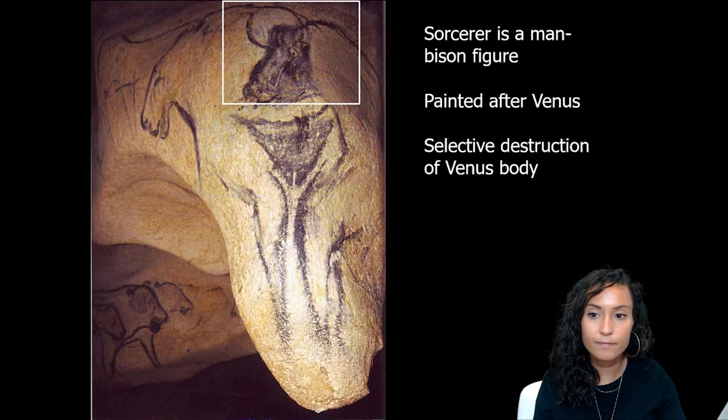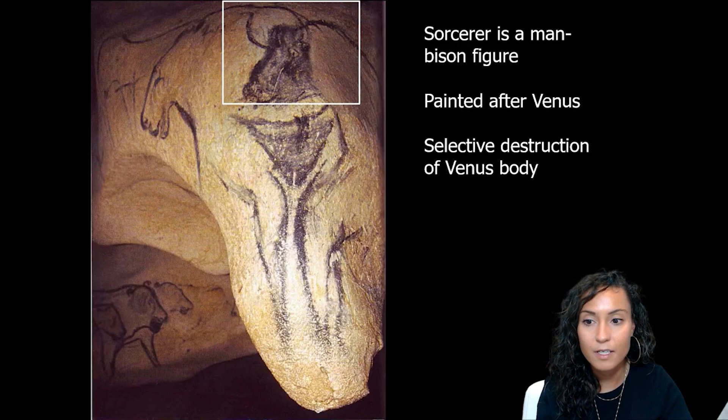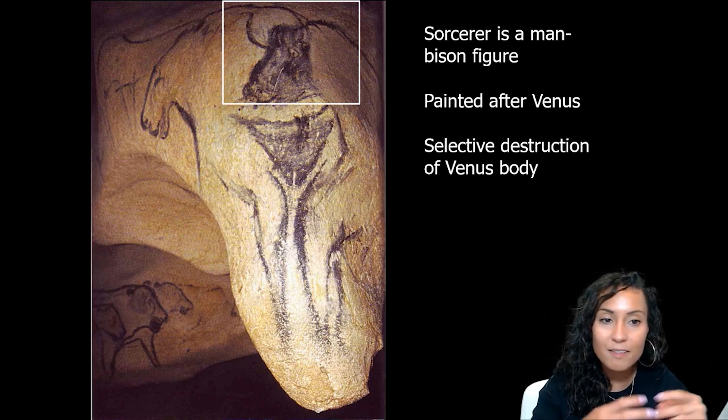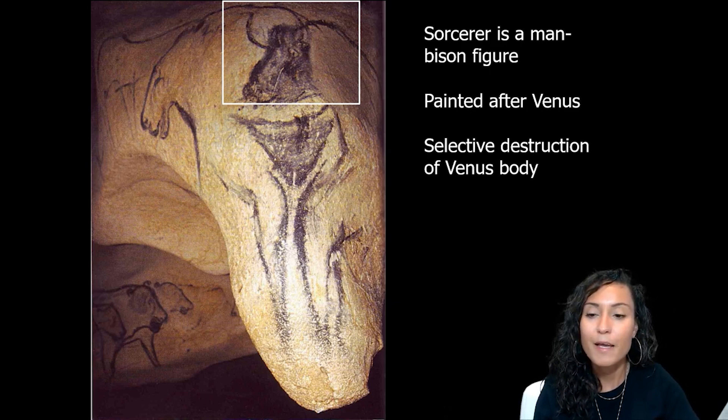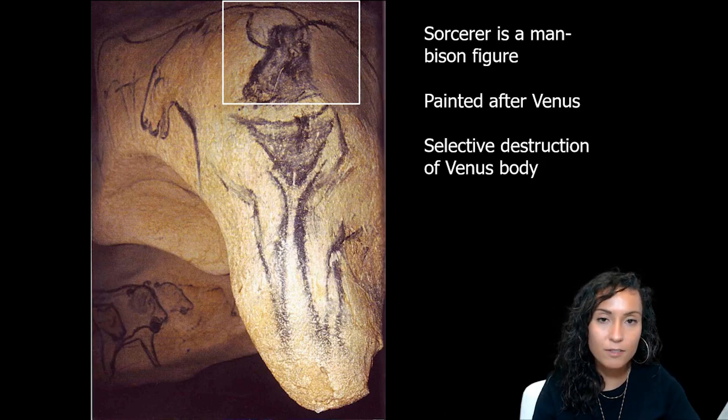The Sorcerer is a half-man, half-bison figure, very similar to the imagery from Le Trois Frères, and is painted over the Venus figure in a kind of selective destruction of her body. The location of the Sorcerer signifies that this chamber was a privileged place accessible only to particular individuals.